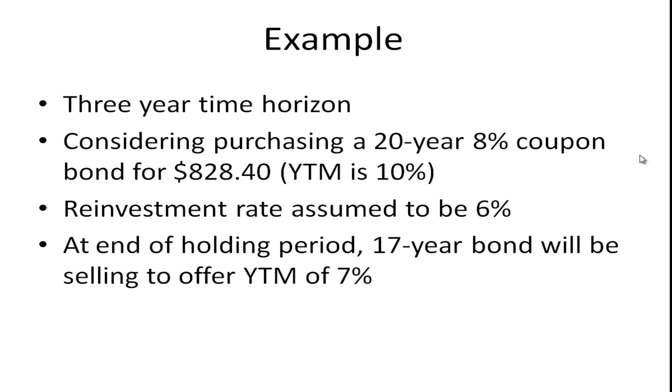Suppose we have a three-year time horizon. And we're considering purchasing a 20-year 8% coupon bond for $828.40. If you work it out, a 20-year bond paying semi-annual payments, so it would pay $40 every six months, 40 periods, with a yield to maturity of 10%, you'll get a price of $828.40.